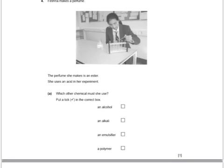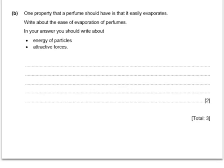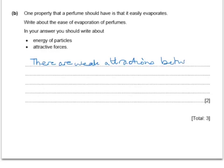Here are a couple of GCSE questions. Feshner makes a perfume — the perfume she makes is an ester, and she uses an acid in her experiment. What other chemical must she use? The other chemical she would use would be an alcohol. Secondly, a property that a perfume should have is that it easily evaporates. Write about the ease of evaporation of perfumes, including the energy of particles and attractive forces. We might say that there are weak attractions between the perfume molecules which are easily broken.